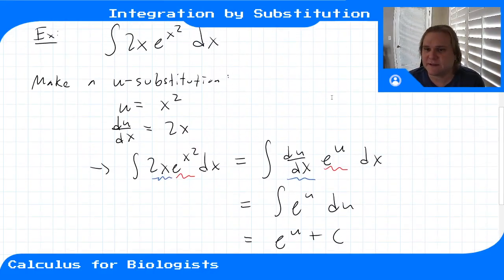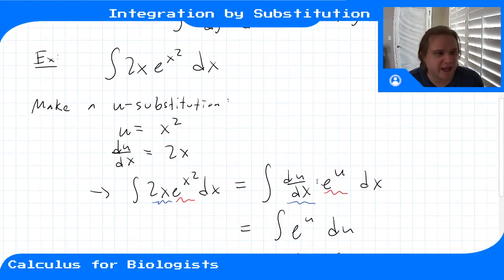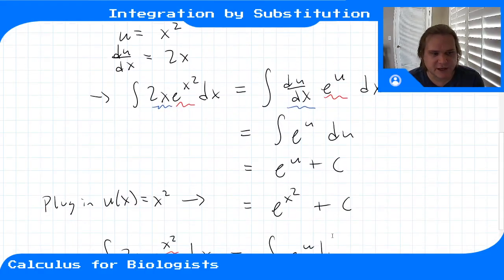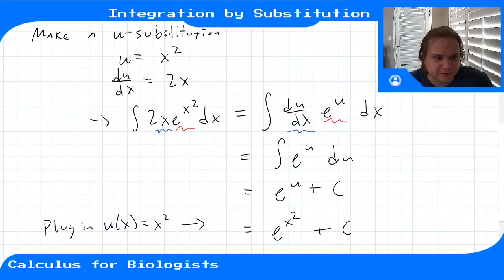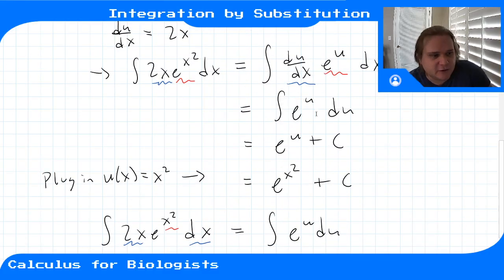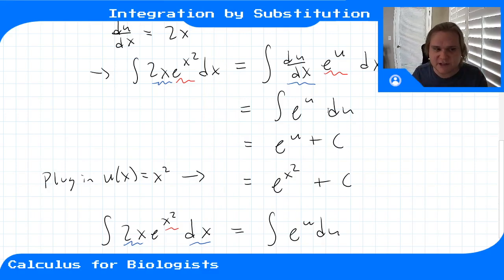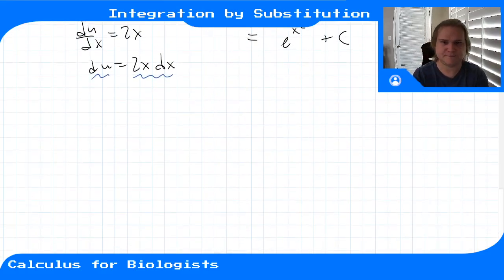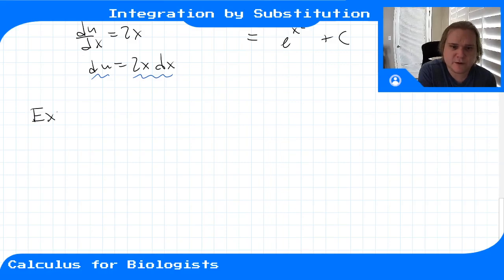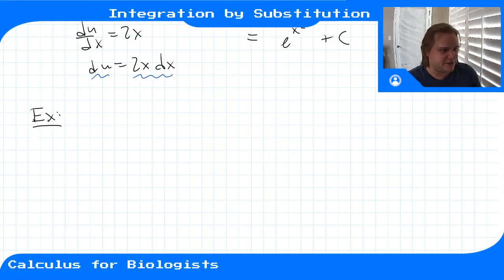All approaches rest on recognizing something chain-rule-like inside the integral. When actually doing this, you're not thinking about the chain rule anymore — you're making a substitution, changing the variable you're integrating with respect to. You then have an integral you know how to take the anti-derivative of, you solve it, and plug back in the original variable. The more times you do this, the more intuitive it becomes.